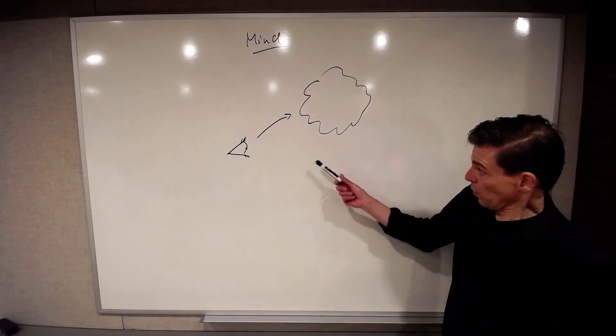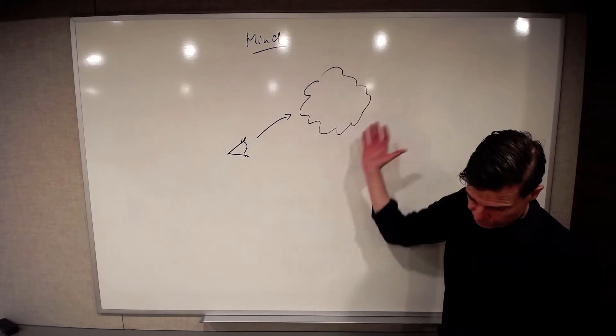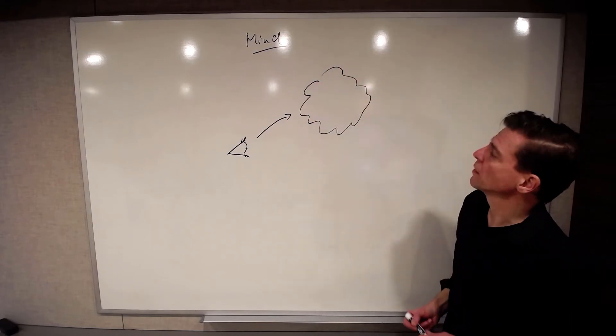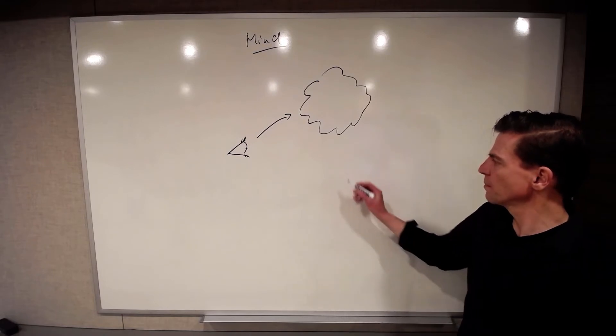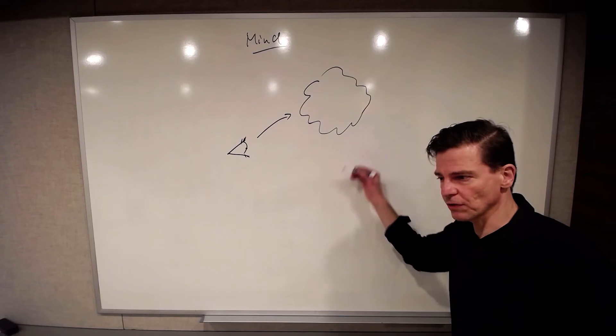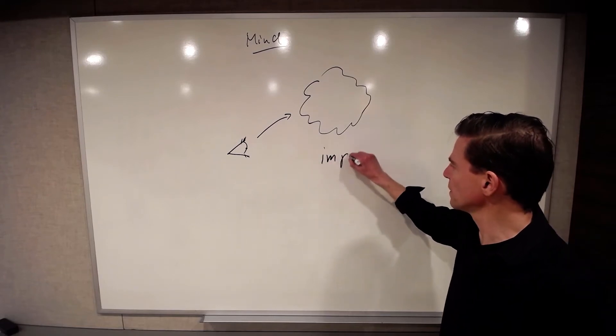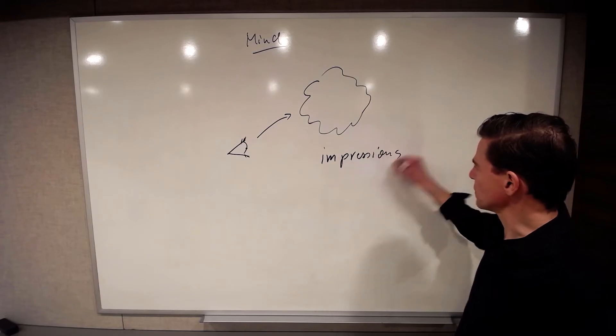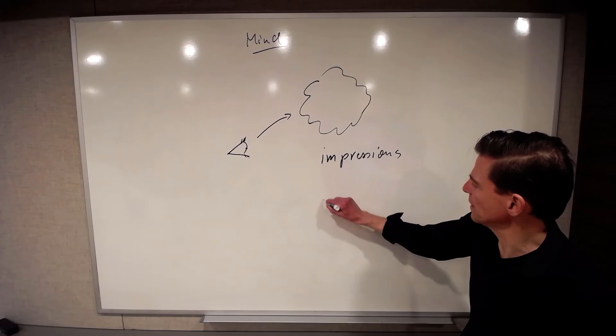But for now, what I want to highlight is that Hume's picture of the mind is that we do have some kind of awareness of some kind of show that's going on in front of our mind's eye. And that show, Hume thinks, is composed of two general types of entities. On the one hand, he says there's impressions. And on the other hand, there's ideas.